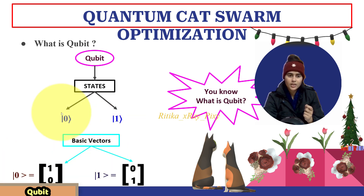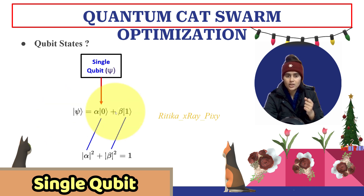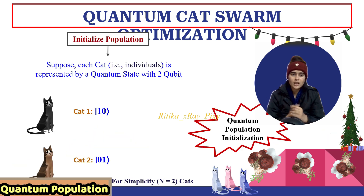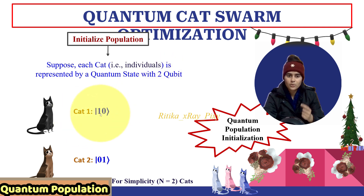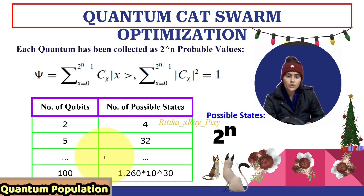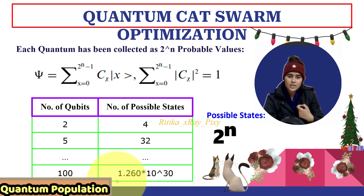A qubit is a quantum bit used to represent quantum information. It has two states: ket-0 and ket-1. We have different basis vectors — for ket-0: [1, 0]; for ket-1: [0, 1]. Dirac notation is used to represent the quantum state. Mathematically, a qubit in superposition is represented as alpha times ket-0 plus beta times ket-1, where alpha and beta are complex probability amplitudes satisfying the normalization condition. For initializing the quantum population, suppose we have two cats represented using quantum states with two qubits each. As the number of qubits increases, the possible states are 2 raised to the power N — for example, 2 qubits gives 4 states, 5 qubits gives 32 states.